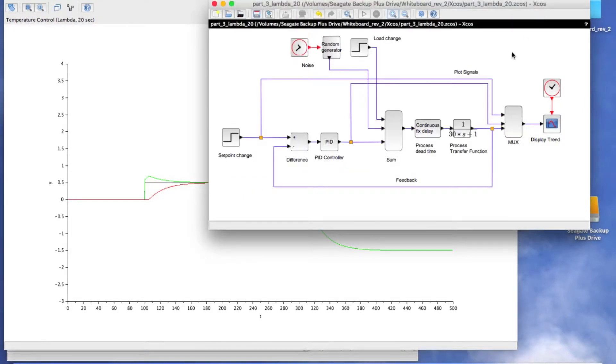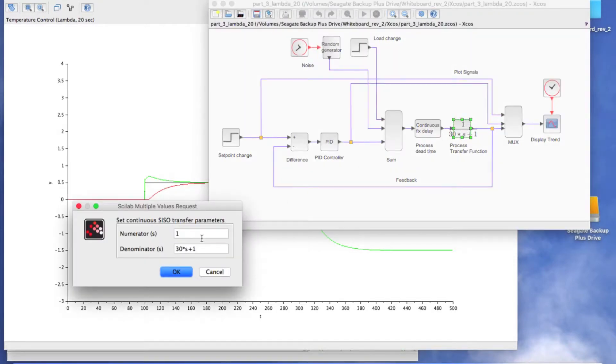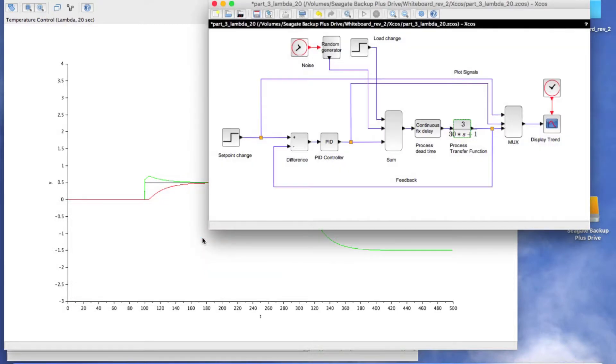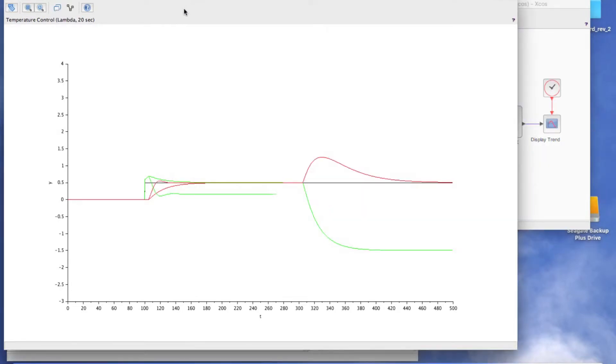Now, let's increase the process gain by a factor of 3. We will leave the time delay alone to start with. Now the response is more aggressive and there is a bit of overshoot. I would say the control is still pretty good.